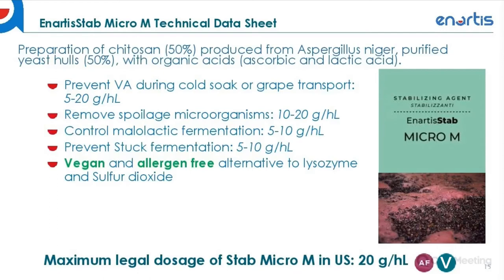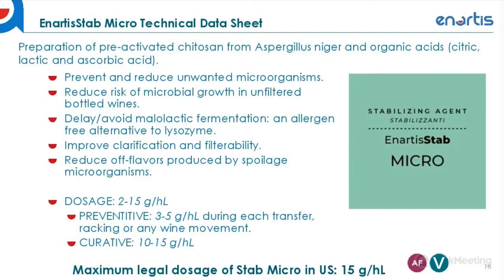Stab Micro M is also useful for producers who have had ongoing problems with ferrocious malolactic bacteria leading to stuck or sluggish fermentation. Compared to Lysozyme, Stab Micro M is vegan and allergen-free, making it a great product for those looking to elaborate low SO2 wines. The maximum legal dosage of Stab Micro M in the U.S. is 20 grams per hectoliter. Anardis Stab Micro is a preparation of pre-activated Ketozan and organic acids for preventing and reducing unwanted microorganisms, usable prophylactically and curatively at various stages during vinification, with increased antimicrobial activity due to the preactivation step.